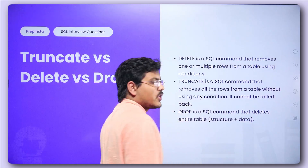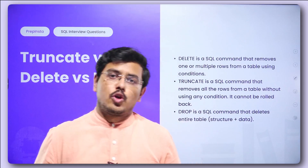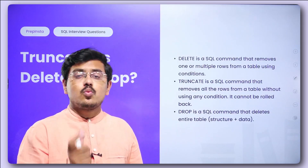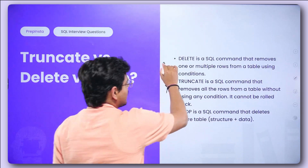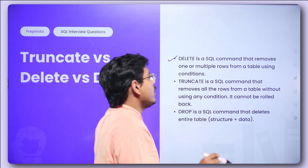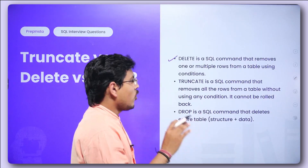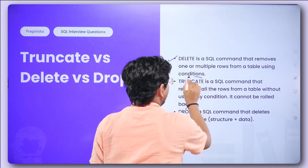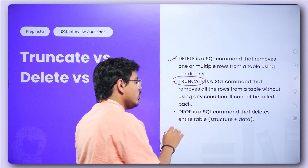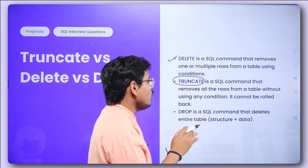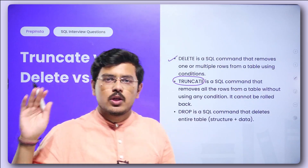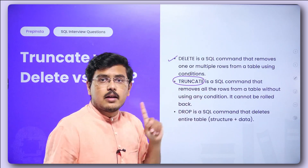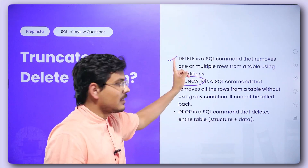The next question is truncate versus delete versus drop. These three commands are often used in SQL but have very different usage. Delete is an SQL command that removes one or multiple rows from a table using various conditions. Truncate is used when you want to remove all rows from a table without using any condition — all rows simply vanish. Importantly, truncate cannot be rolled back, whereas delete can be rolled back.